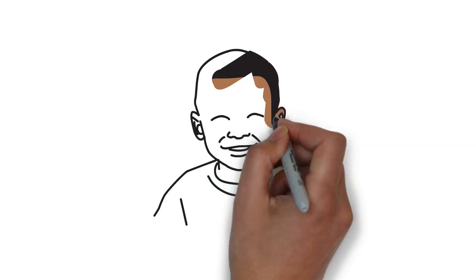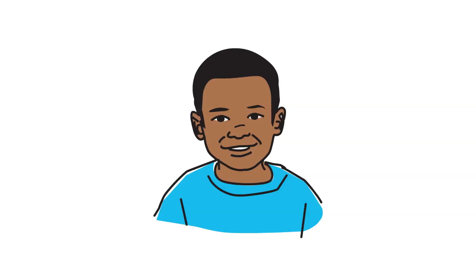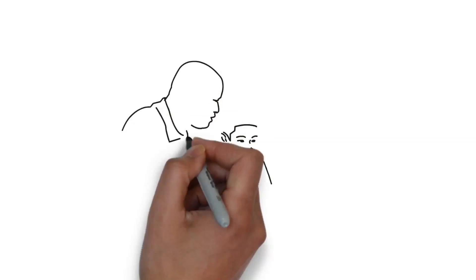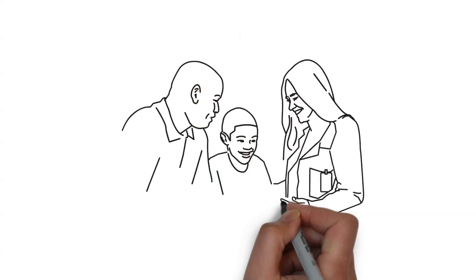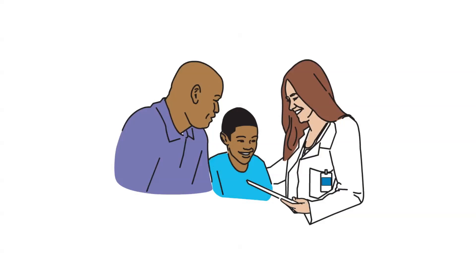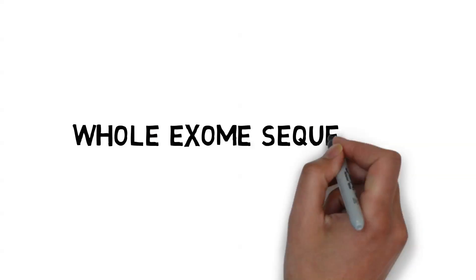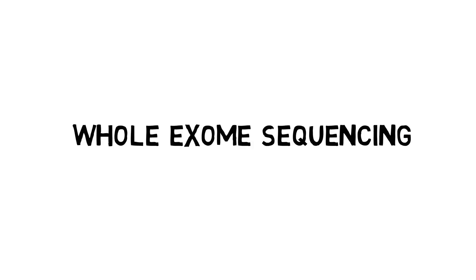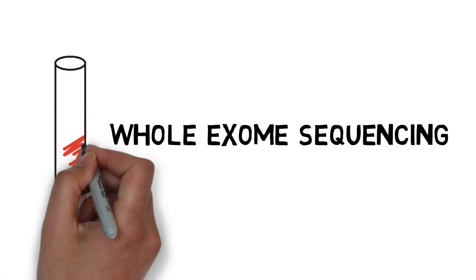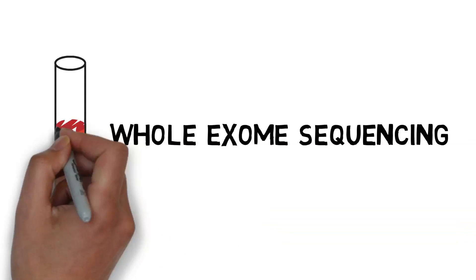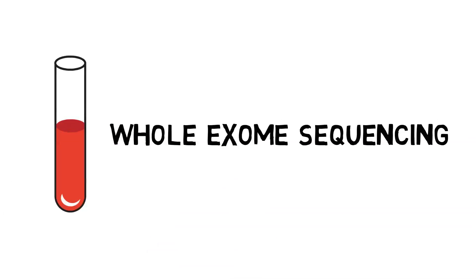Meet Jimmy. Jimmy is a great kid, but has some specific health and developmental difficulties. His family met with their doctor to see if they can figure out the cause of his difficulties. The doctor evaluated Jimmy and decided he meets the criteria for a new genetic test called whole exome sequencing. After a long discussion about the pros and cons of testing, Jimmy's family decided to proceed. A blood sample was drawn from Jimmy and sent for this genetic testing.